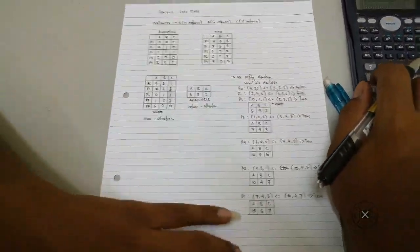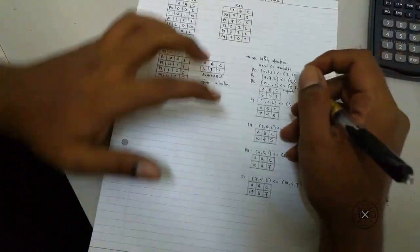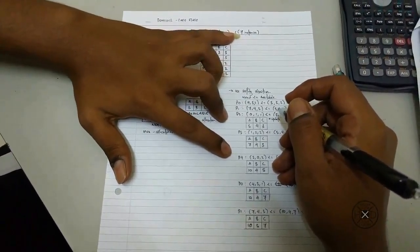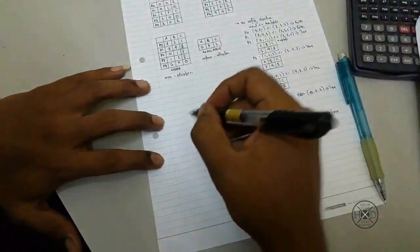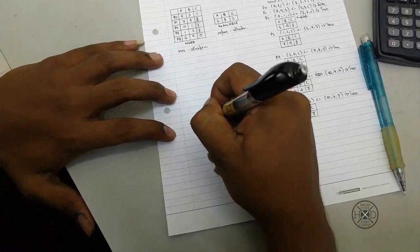As you see the new available table is 10, 5, 7, is same with the instances. A is 10, B is 5, and C is 7. So it's a safe state.